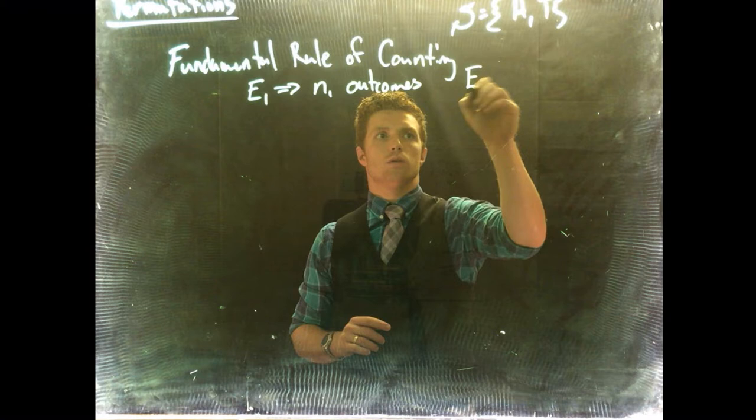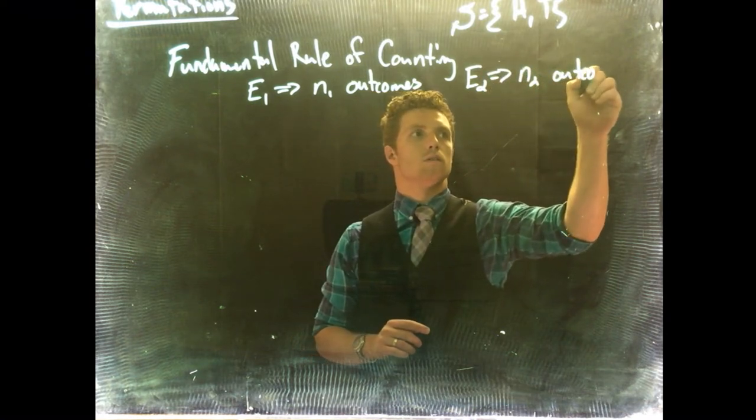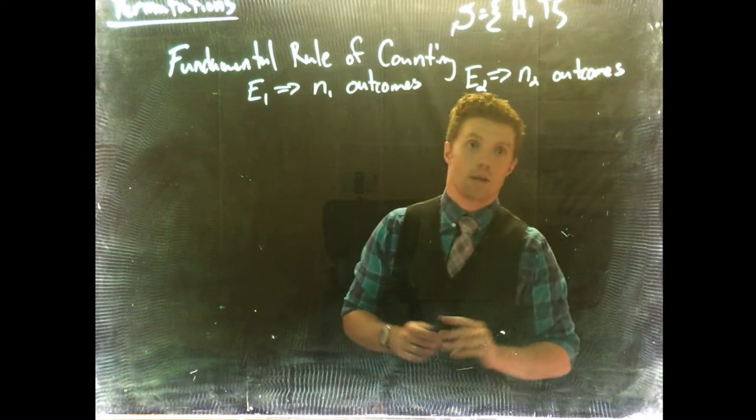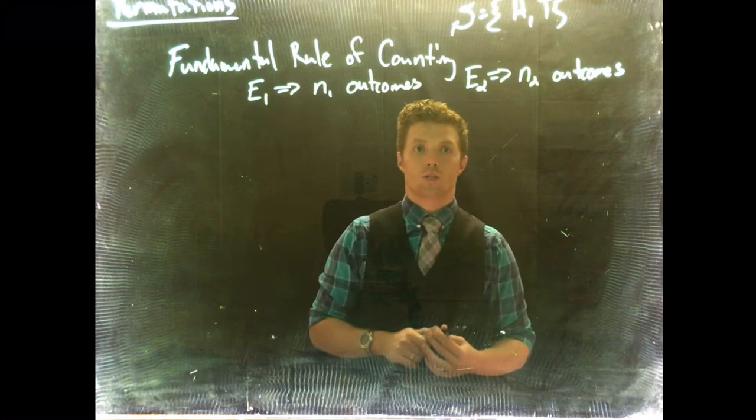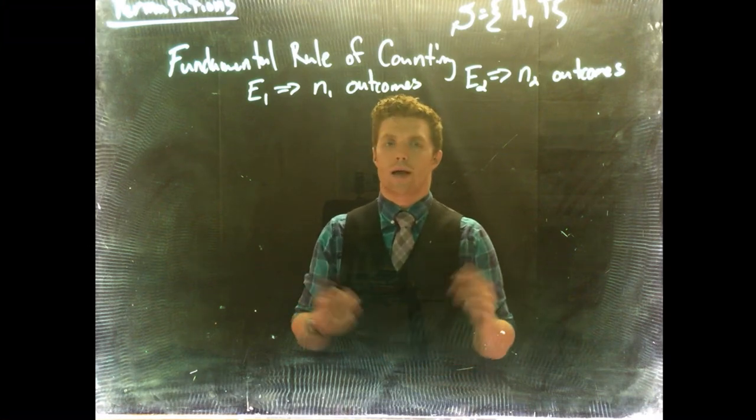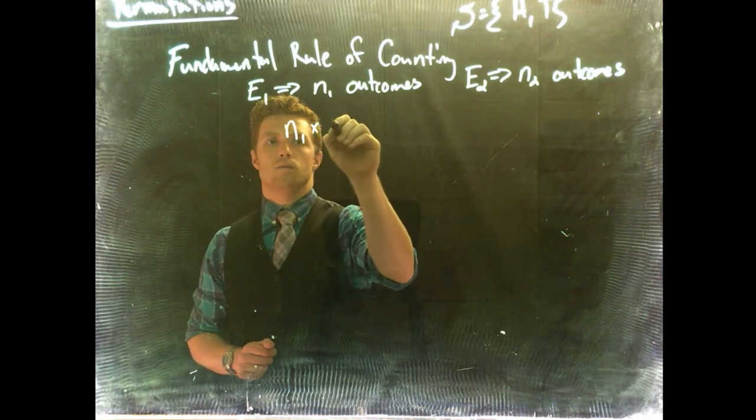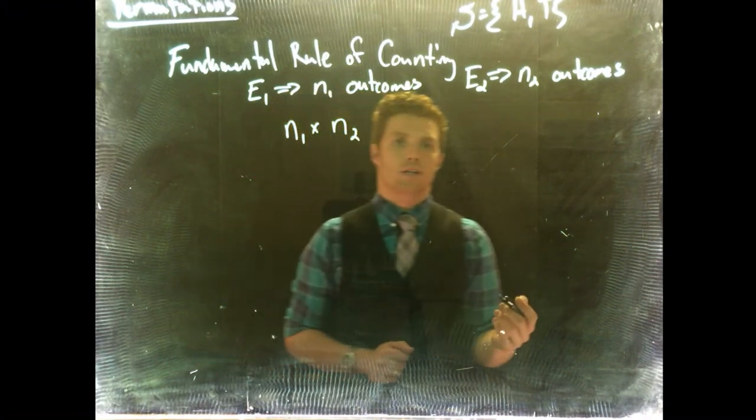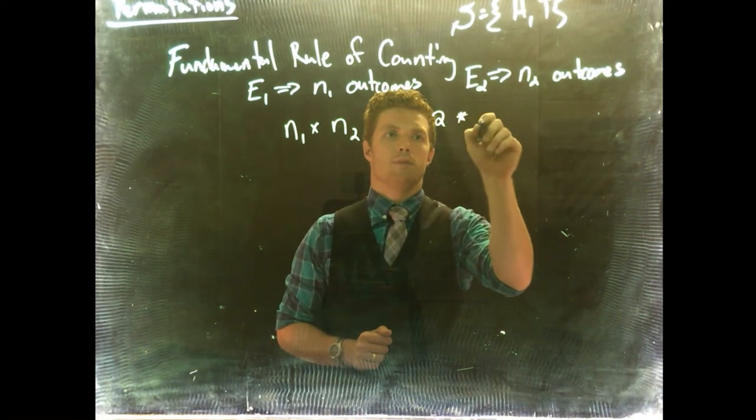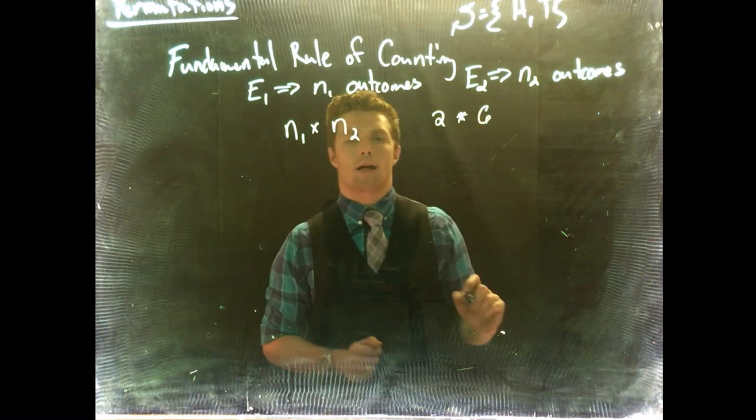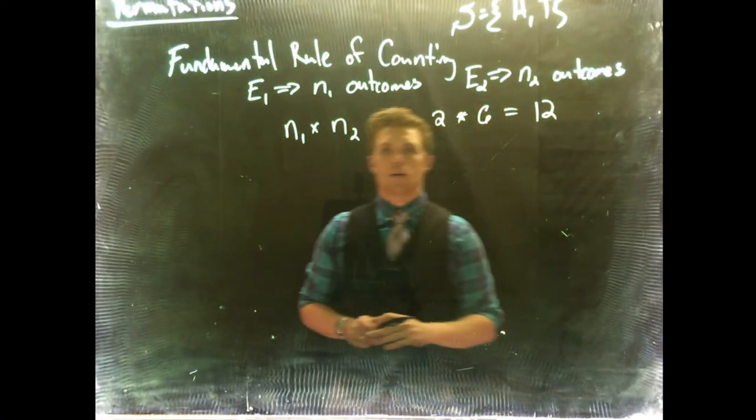And we have an event two, and it has n2 outcomes. We're going to flip a coin and roll a dice. We want to know how many outcomes are there going to be with our new outcome. We can do this by simply doing n1 times n2. With our dice example, this would be two flips of the coin multiplied by six possible outcomes of the roll of the dice. So that would give us 12 possible outcomes.